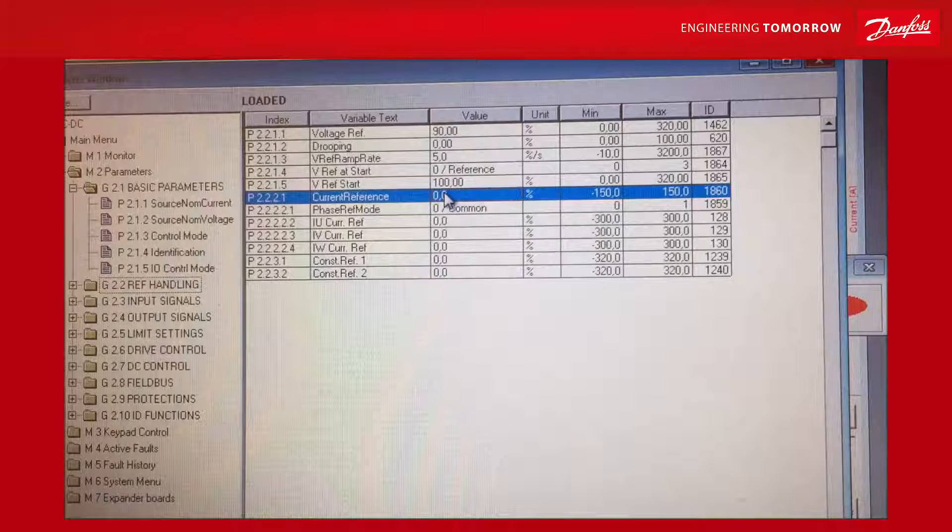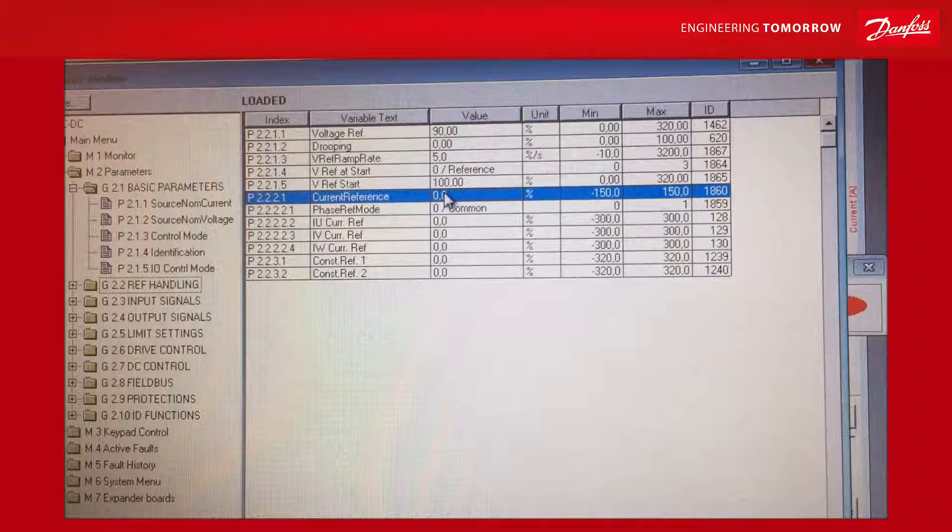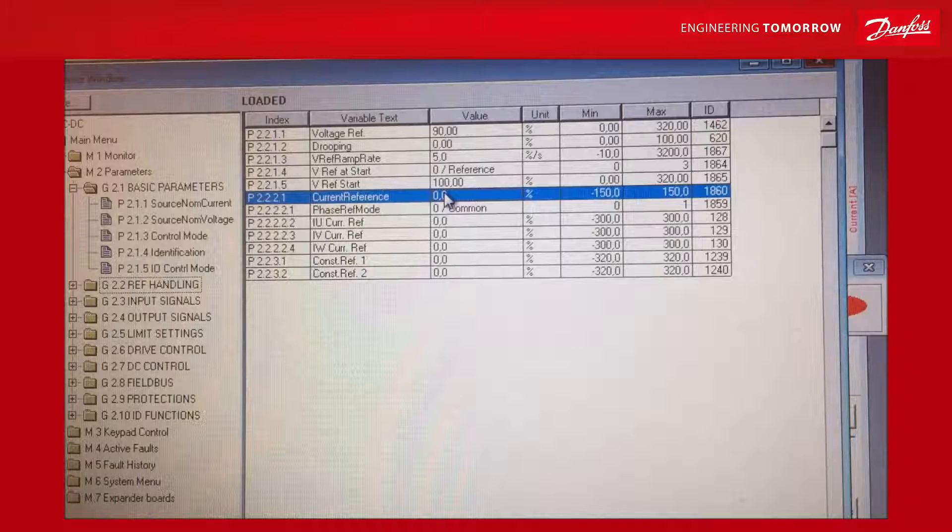But actually right now I haven't connected the active front end to my DC bus. I just want to see that it's able to produce 680 volts on its DC bus.